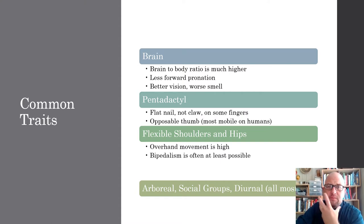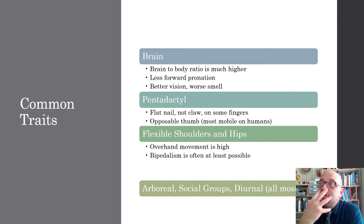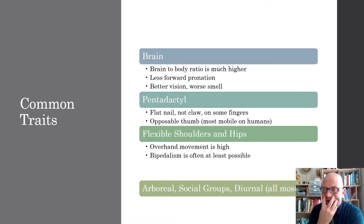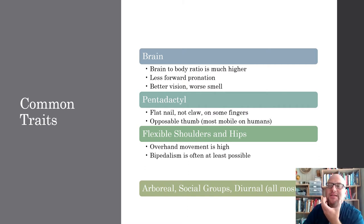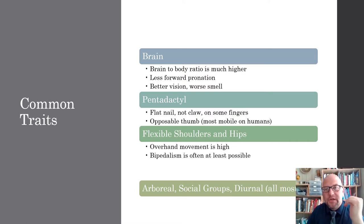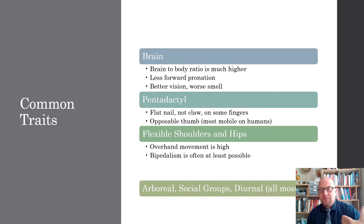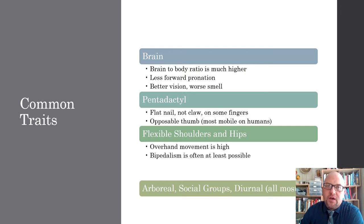Going along with brain and head is that we have less forward prognathism. Forward prognathism refers to what we might call a snout or muzzle in other animals — the fact that our jaw and teeth don't protrude as far as a lot of animals do. As you go up the evolutionary sequence, you see that this becomes less and less pronounced; our jaws and teeth have gotten smaller.